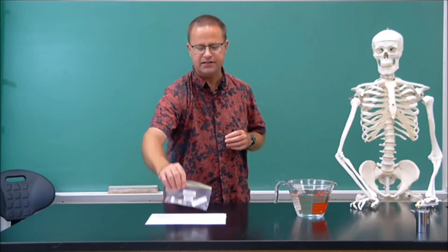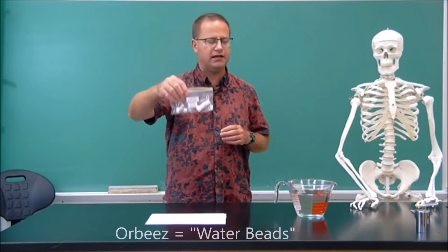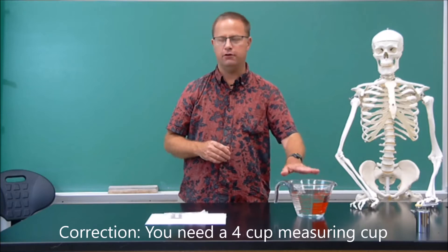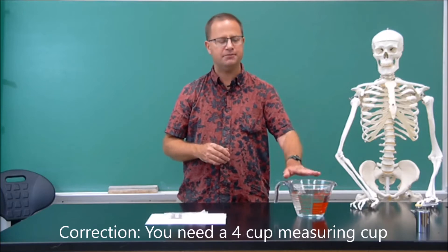So what you need out of your packet is the baggie with the Orbeez and also the kosher salt. You also need a two or four cup measuring cup full of water. In this case, I have four cups, so I filled it up with all four cups of water.